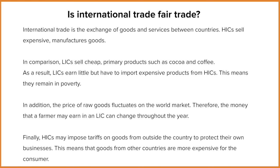Not only are the raw goods cheaper, but the prices of these goods fluctuate rapidly and consistently throughout the year. So while in the summer their goods may sell for one price, in a later season it may be cheaper or more expensive, which means they can't guarantee how much money they'll actually make across the year.